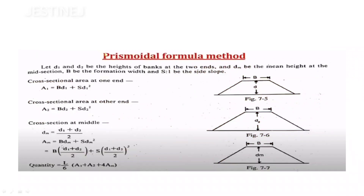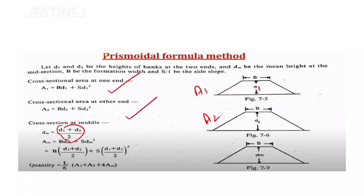The last method is the prismoidal formula. You calculate A1 = bd1 + sd1² and A2 = bd2 + sd2² individually, then calculate the mean area using the average depth dm = (d1 + d2) / 2. The total volume is given by: V = (L/6) × (A1 + A2 + 4 × mean area). Among the three methods, the prismoidal formula is the most accurate.